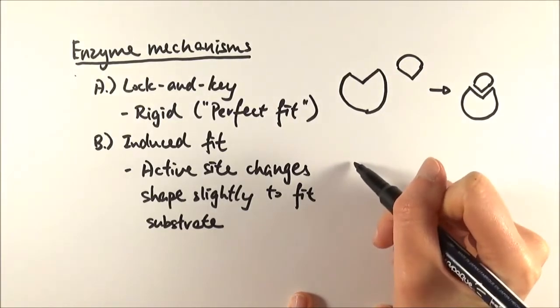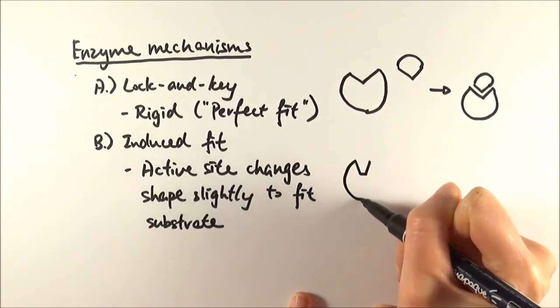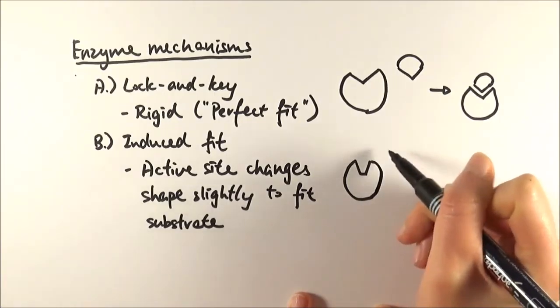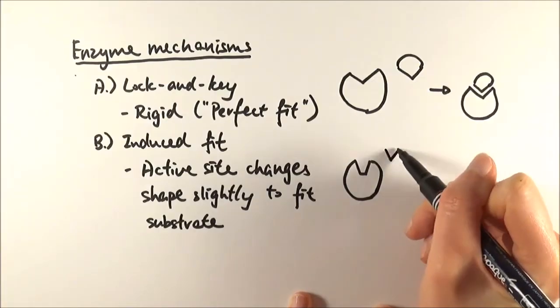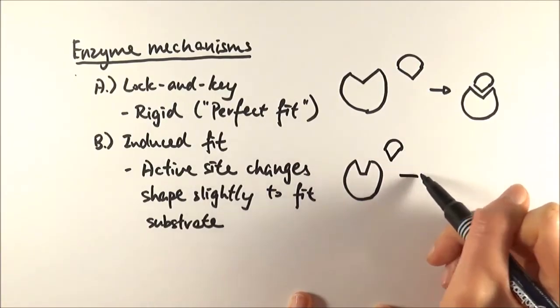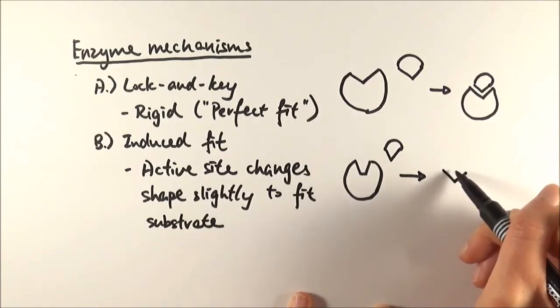Whereas in induced fit, let's say the enzyme is originally like this, so it kind of looks like that and it won't be able to fit the substrate. However, as the substrate approaches, what then happens is it will change its shape slightly in order for that to happen.